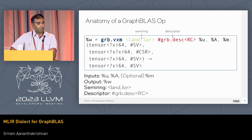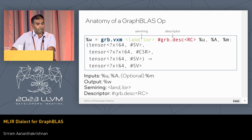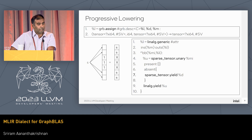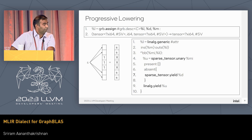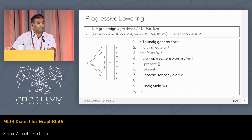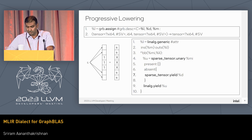This is what a GraphBLAS op looks like in the GraphBLAS dialect. GRB is the namespace, VXM is the op, and both the semiring and descriptors are attributes. VXM multiplies sparse tensor U with sparse matrix A, and you can also apply an optional mask. This is an example of our lowering — here the operator is graphblas.assign, whose semantics are to assign a scalar value to a sparse tensor while applying a right mask. The descriptor says to use the complement of the mask. We lower this to a linalg generic op with the mask as input and sparse tensor unary as the payload. The sparse tensor unary executes the present region when the mask is non-zero, and the absent region when it's zero. For this complement case, we return the scalar from the absent region.